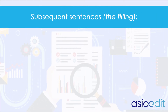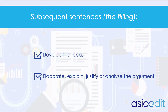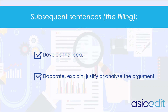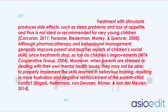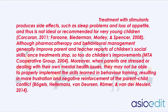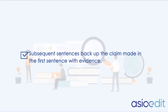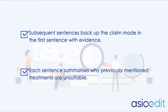The subsequent sentences, or the filling, develop the idea, providing further detail that elaborates, explains, justifies or analyses the argument. In our example, the subsequent sentences back up the claim made in the first sentence with evidence from the literature. Each sentence briefly summarises why previously mentioned treatments are unsuitable. This builds a strong argument.